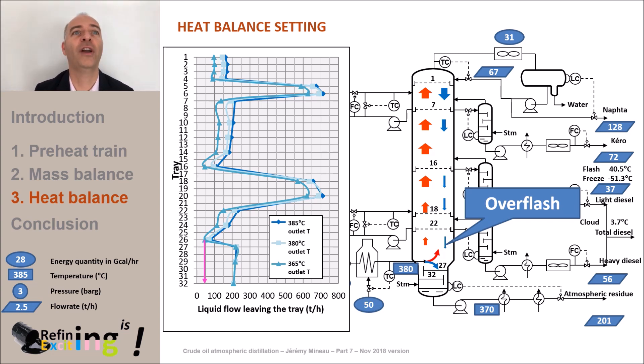Here, we are at the end of the heat balance of the column. The installation of pump arounds and the optimization process of the overflash led to a decrease in kerosene flash point by 4 degrees C.